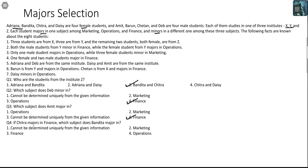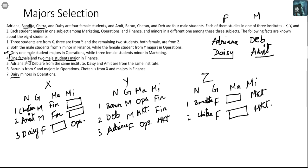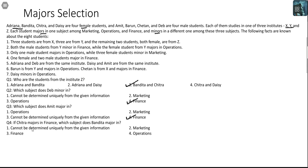Question 4: If Chitra majors in Finance, which subject does Bandita major in? One female was supposed to major in Finance. If Chitra majors in Finance, Bandita cannot major in Finance, and she also cannot major in Marketing because her minor is Marketing. So Bandita will necessarily major in Operations — answer is Option 4, Operations. This is a standard distribution-based set. Start off by listing what parameters you have to record; once that is done, everything else will become easy to handle.